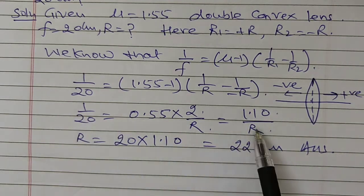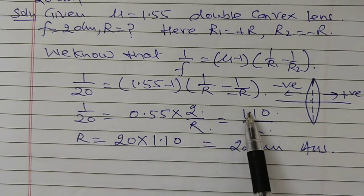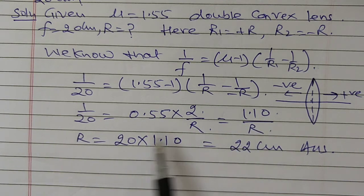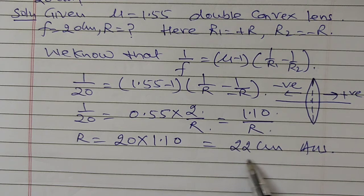On cross multiplying, R is equal to 20 into 1.10, therefore R is equal to 22 cm.